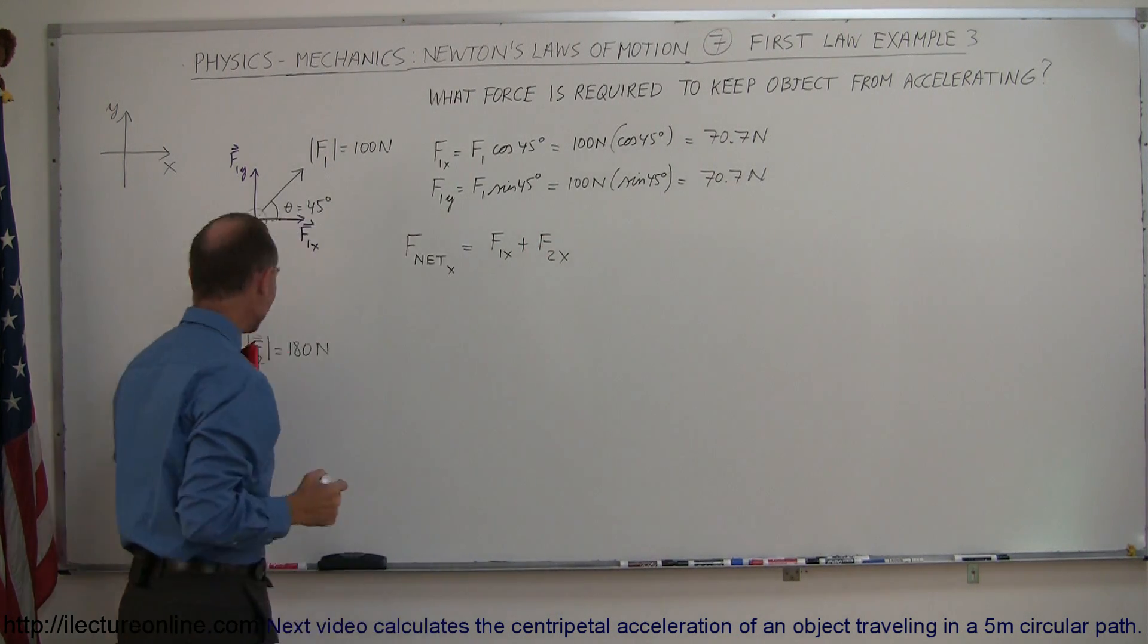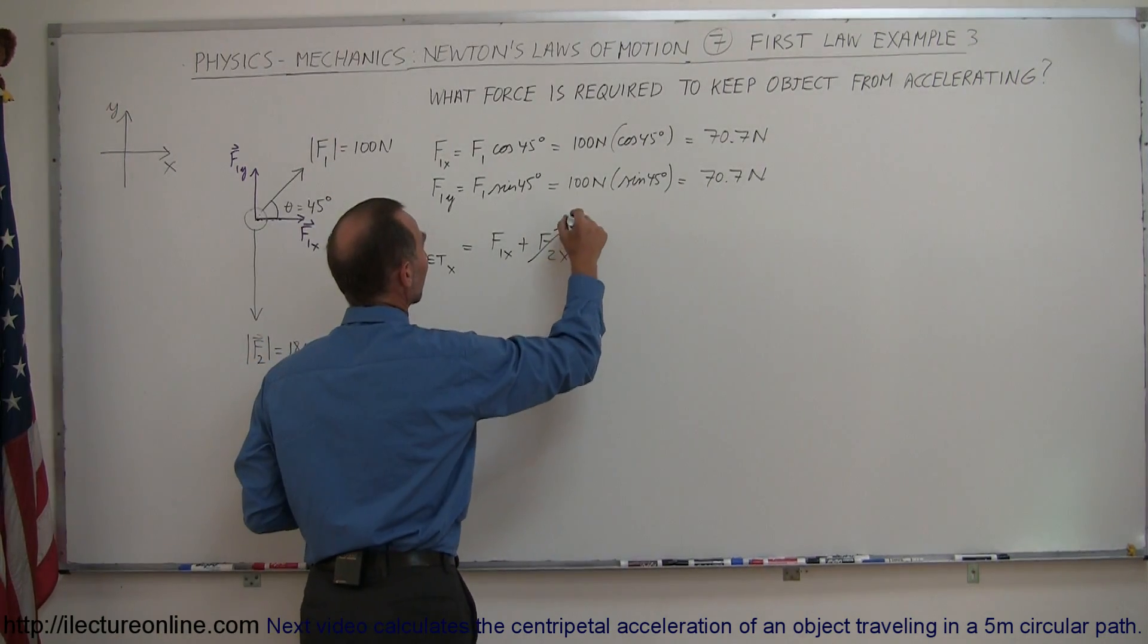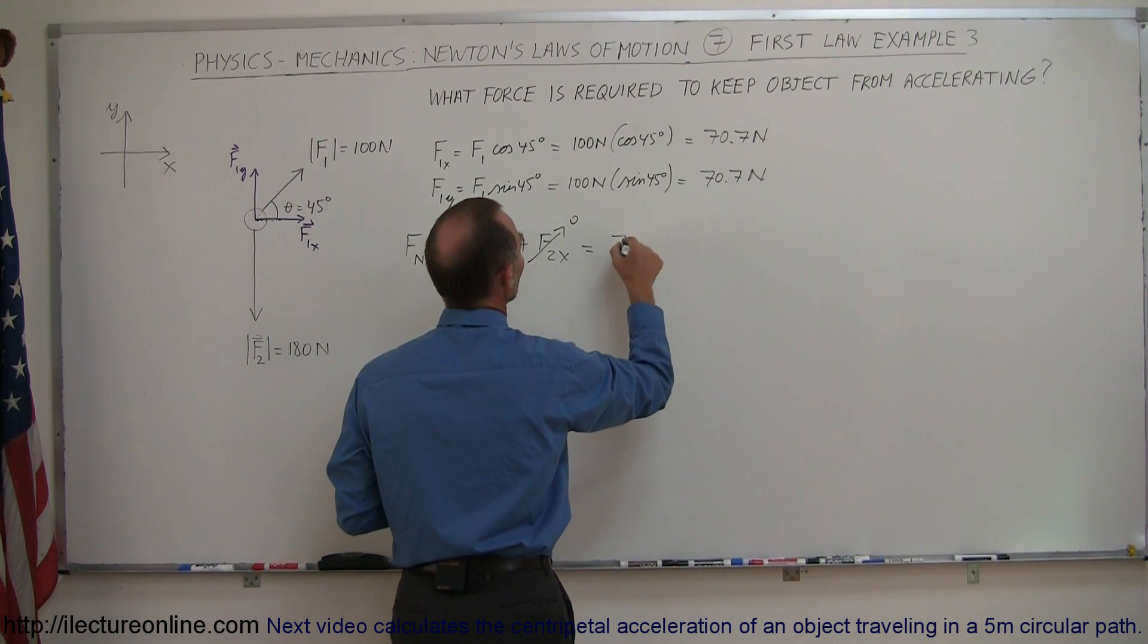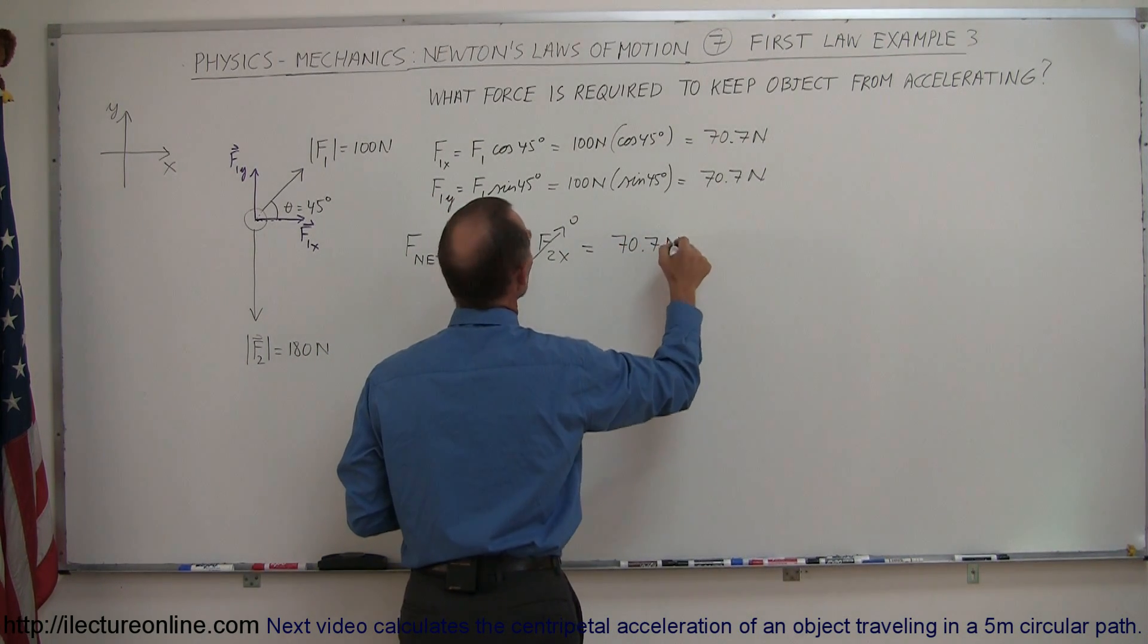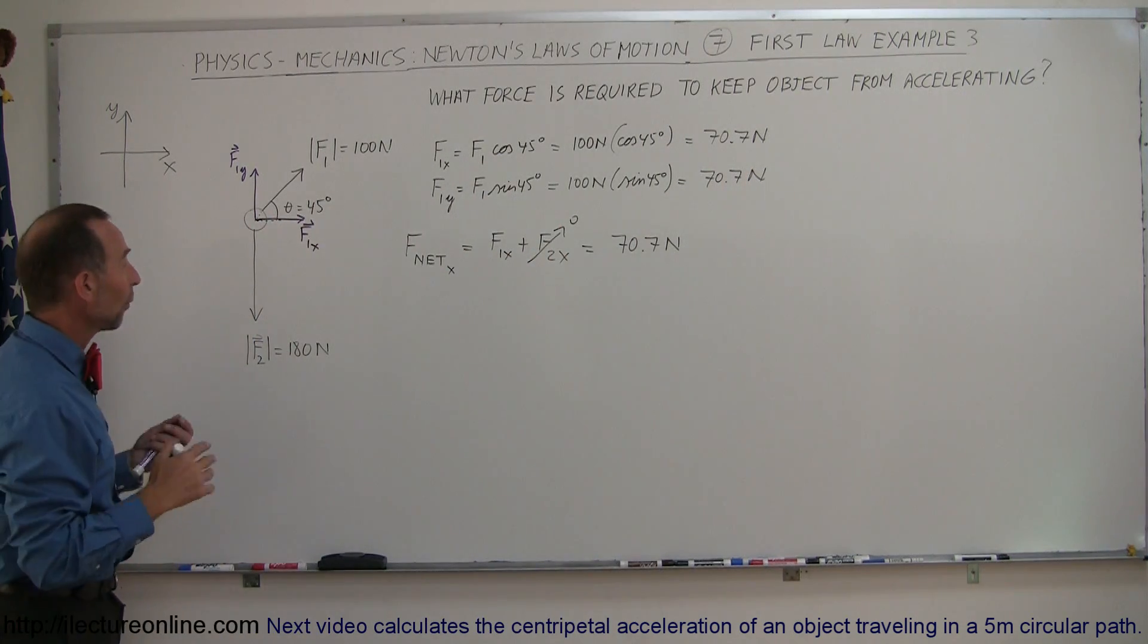And of course, F2X, F2 does not have an X component. So we can go ahead and just ignore that. And so simply the X direction, and that would be equal to 70.7 Newtons. That is from that component right there.